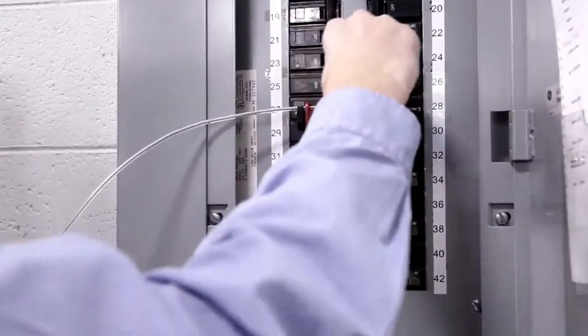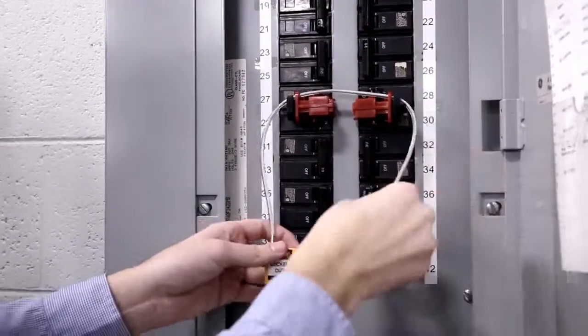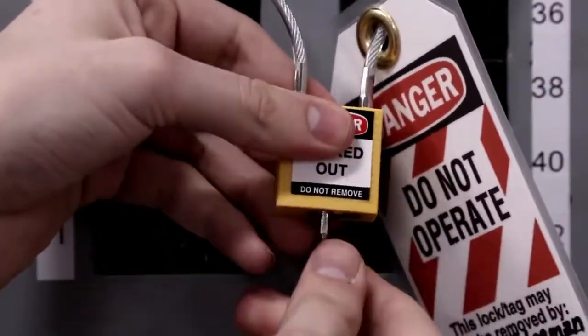Thread the padlock cable through all circuits to be locked out, place the worker's protective tag on the device, and lock the device.